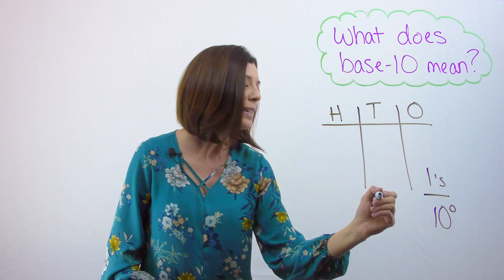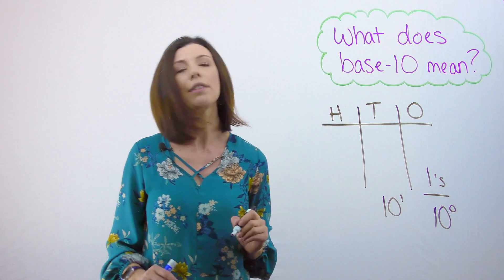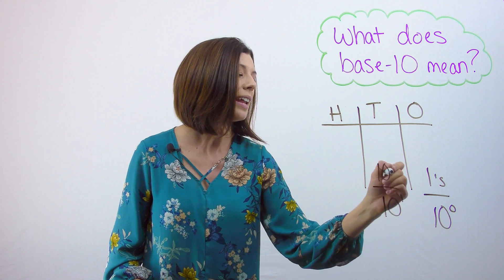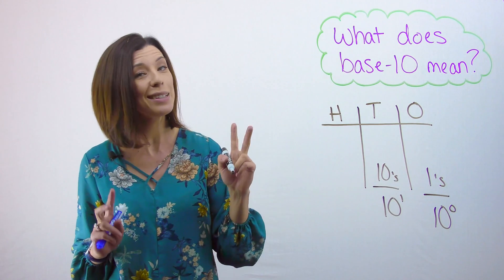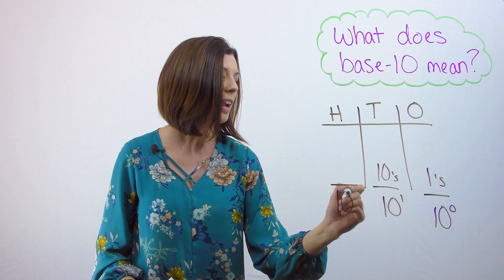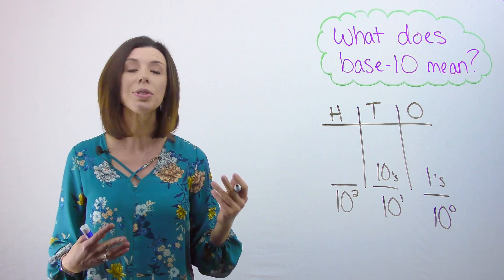Likewise, my 10s place, I know that I get that from 10 to the power of 1. 10 to the power of 1 is 10, hence we call it the 10s place. If I keep going, I get to the hundreds and I know that I get 10 squared. Are you seeing a pattern?